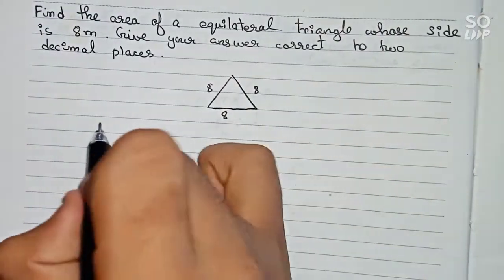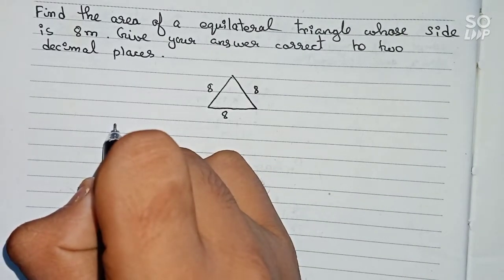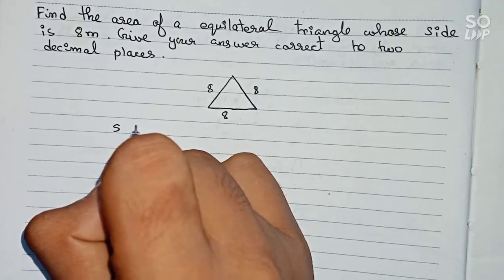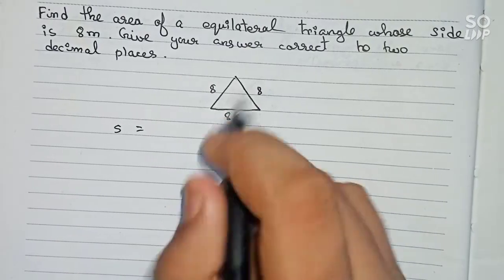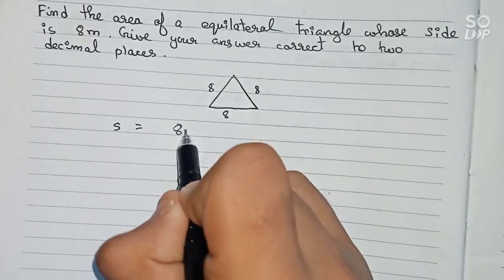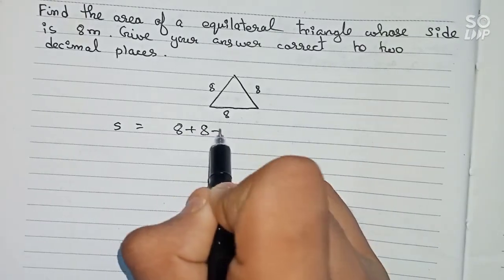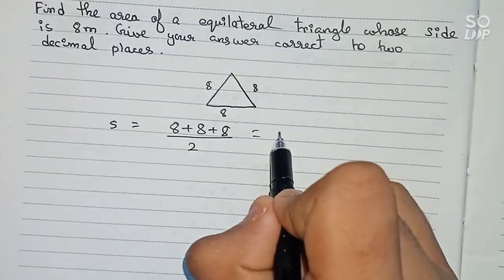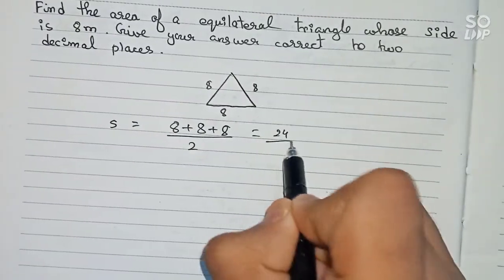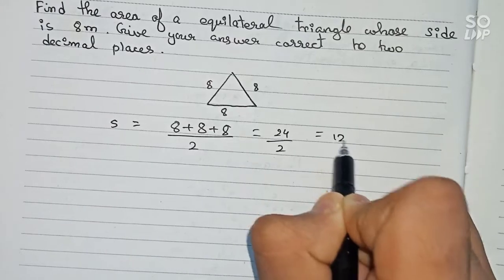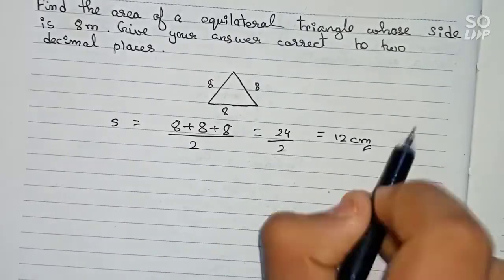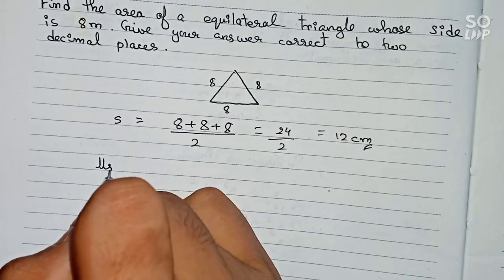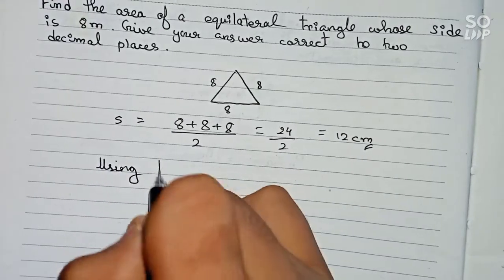For finding out the area, we will find the semi-perimeter first. So s is equal to all three sides, that means 8 plus 8 plus 8, divided by 2. So 8 plus 8 plus 8 is equal to 24, divided by 2, that is equal to 12. So the semi-perimeter s is equal to 12. Now we write using Heron's formula.